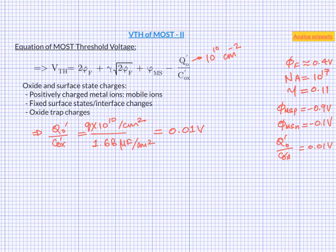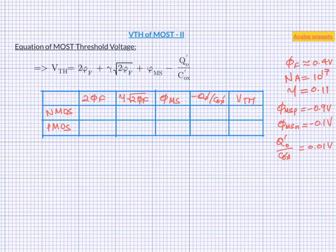Let's collect all the terms and see what the threshold voltage comes out to be. Here we have the table with one row each for n-mos and p-mos. First column is 2 phi f. We know that phi f is 0.4 volts. This term will be positive for n-mos and negative for p-mos.